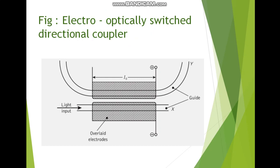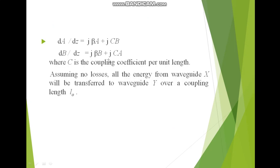The input light beam travels through the structure; these are the electrodes and this is the coupling region length. The two waveguides are X and Y, with electrodes placed positive and negative. When the two waveguide modes have equal propagation constant β with amplitudes A and B, the coupled mode equations are: dA/dZ = jβA + jCB and dB/dZ = jβB + jCA, where C is the coupling coefficient per unit length. Assuming no losses, all energy from waveguide X will be transferred to waveguide Y over a coupling length L₀.